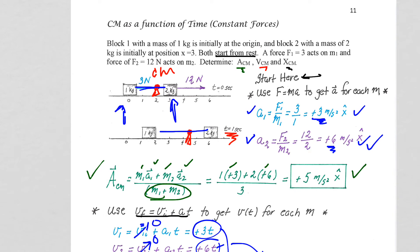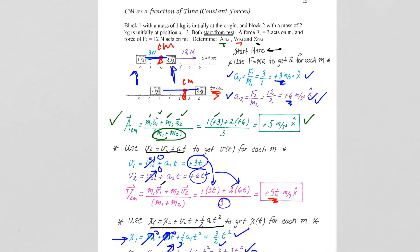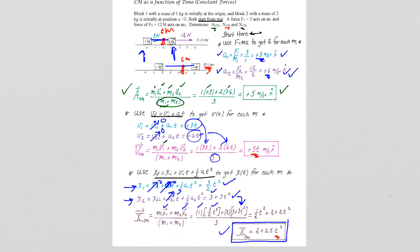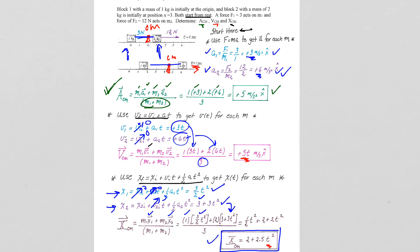So that is the meaning of the center of mass position. We utilized F equals MA and the constant acceleration equations, along with M1 A1 plus M2 A2 over the total mass for acceleration, then M1 V1 plus M2 V2 over the total mass for velocity, and finally M1 X1 plus M2 X2 over the total mass for position.